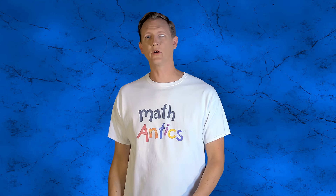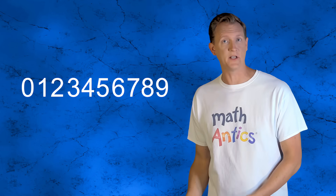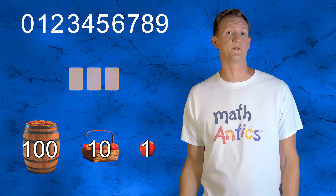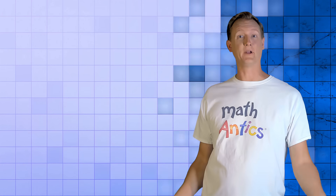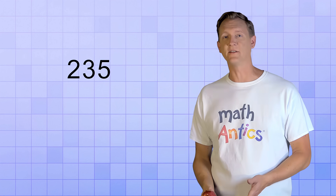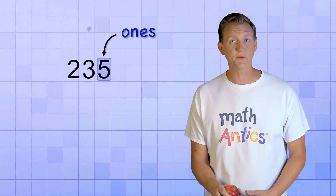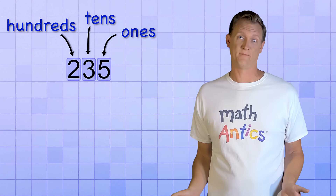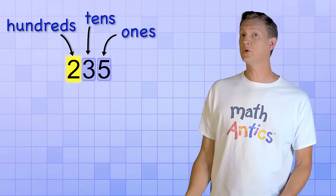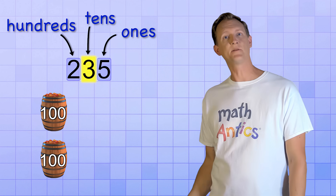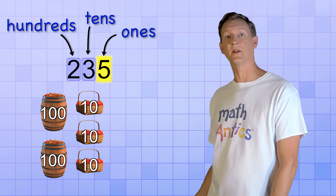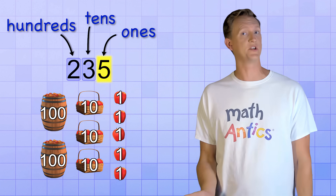In that previous video, we learned how to count using just 10 different digits and number places that represent different sized groups. For example, if we needed to count 235 apples, we use different number places for counting by 1's, by groups of 10, and by groups of 100. The digit 2 in the 100's place represents 2 hundreds, the 3 in the 10's place represents 3 tens, or 30, and the 5 in the 1's place represents 5 ones, or just 5.